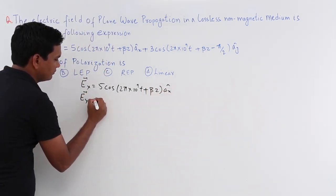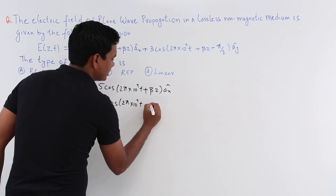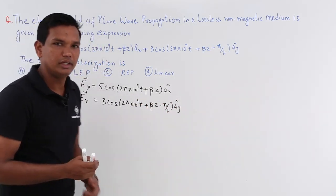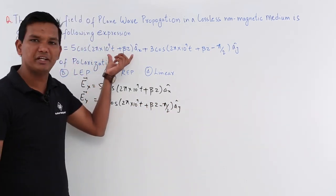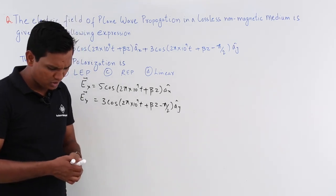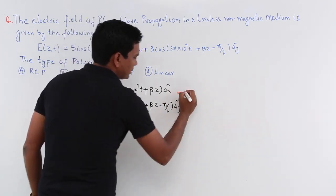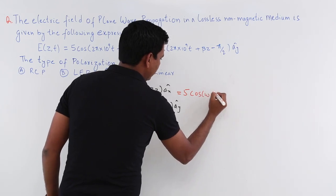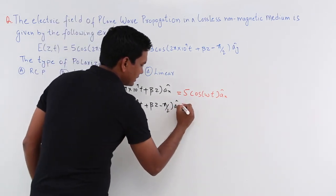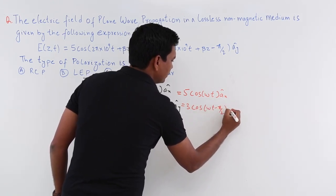The Ey component would be 3 cos(2π × 10⁹ t + βz − π/2) Ay cap. So it has 2 components — one along the x axis and another along the y axis. I can write this in a simplified form: 5 cos(ωt) Ax cap and 3 cos(ωt − π/2) Ay cap, where I have removed the βz term for simplification.